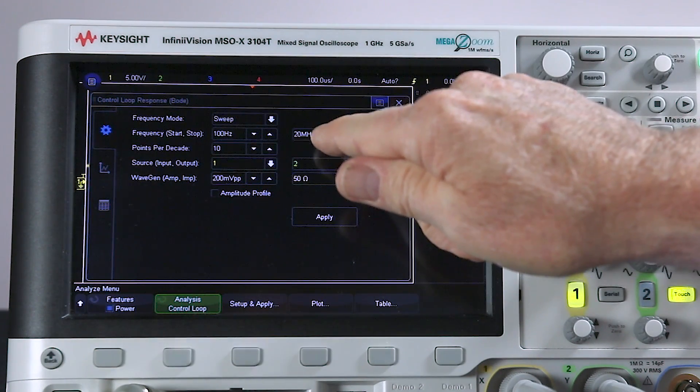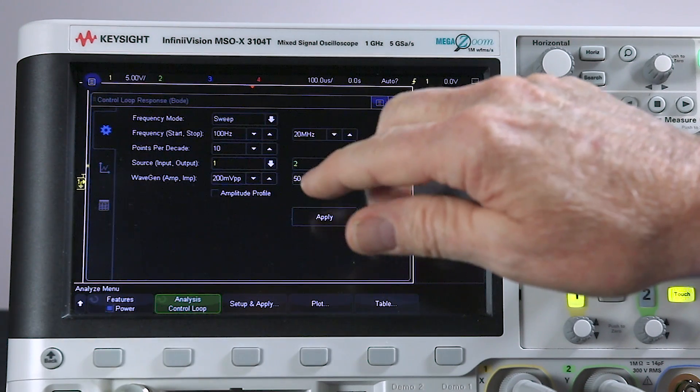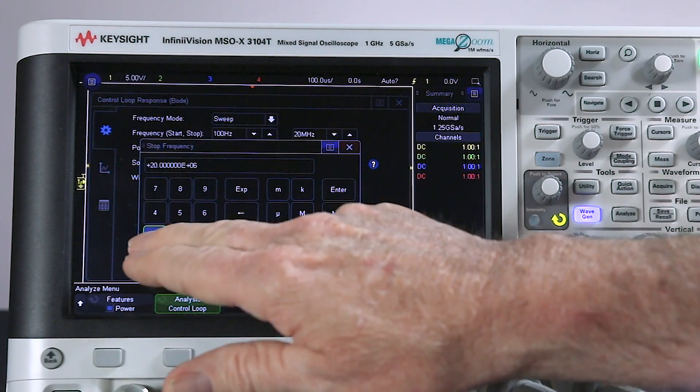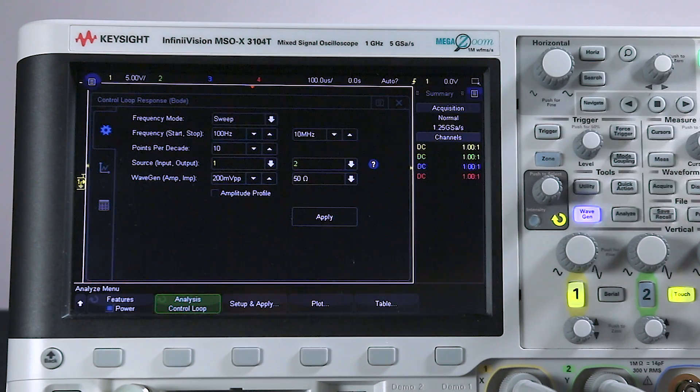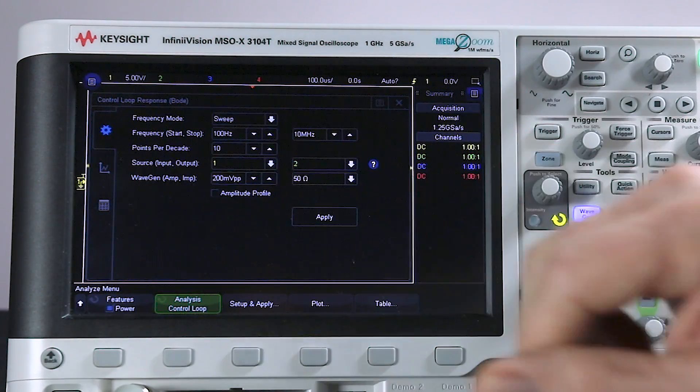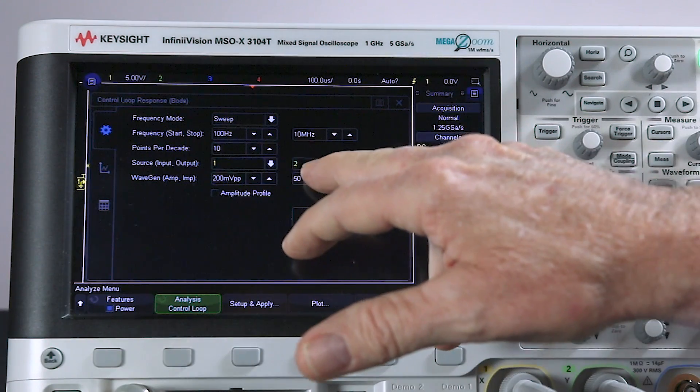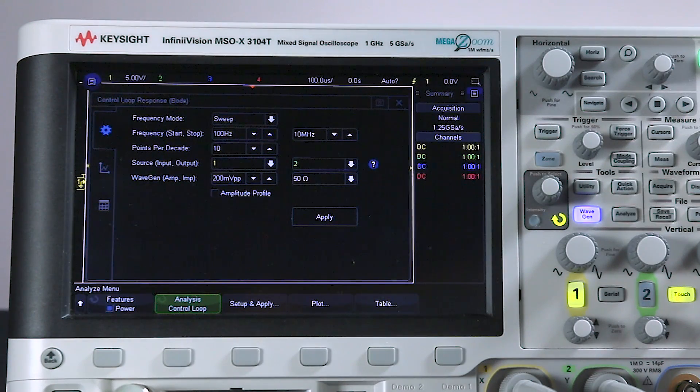There's a start frequency and a stop frequency. The start frequency can be as low as 20 hertz. Stop frequency max is 20 megahertz. I'm going to only test up to 10 megahertz for this particular device. You can select points per decade, up to 50 points per decade. You can define which of the scope's inputs are V in, in this case channel 1, and V out is channel 2. We'll use the defaults.